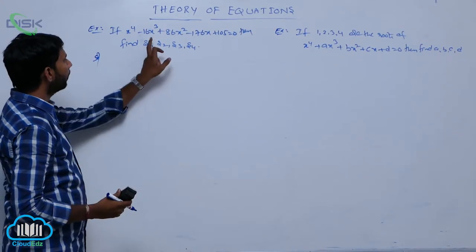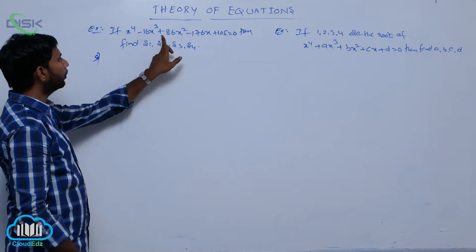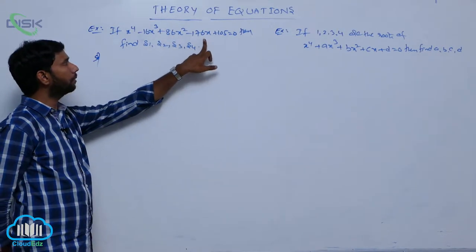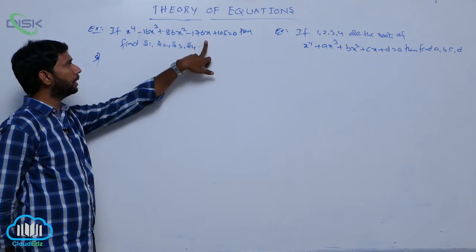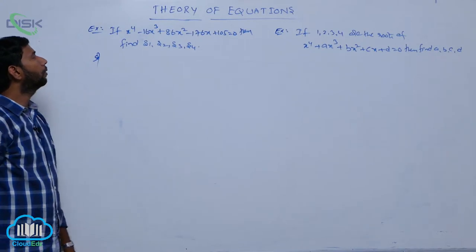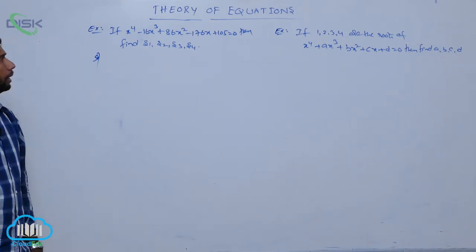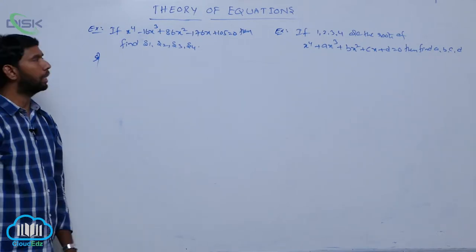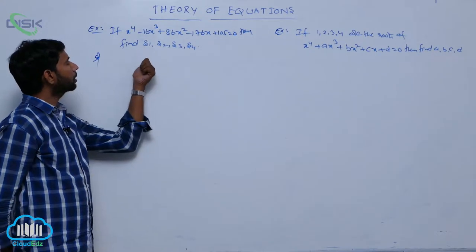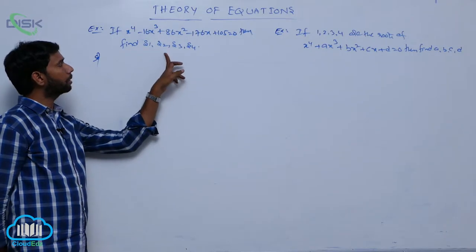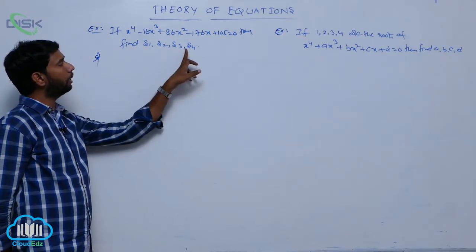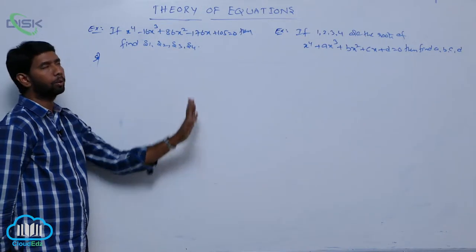The first example: if x^4 minus 16x^3 plus 86x^2 minus 176x plus 105 equals 0, then find s1, s2, s3, s4. That means: s1 is the sum of the roots, s2 is the sum of the roots taken 2 at a time, s3 is the sum of the roots taken 3 at a time, and s4 is the product of all 4 roots.